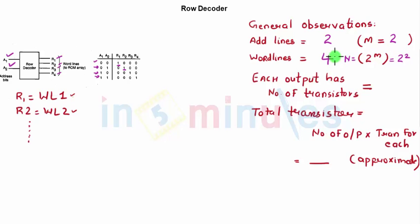And we'll call this term n. Each output has how many number of transistors? Remember, we are just counting pull-down transistors, ignoring PMOS pull-ups and also ignoring inverters which we have used to invert our address lines. We are ignoring this just for assumption.